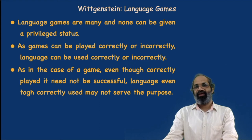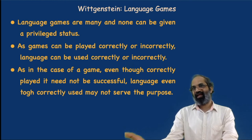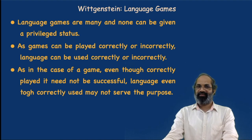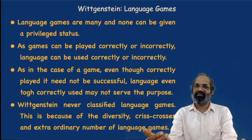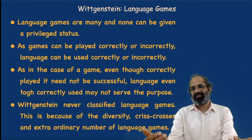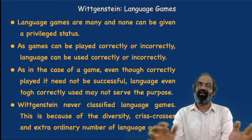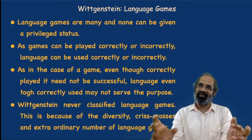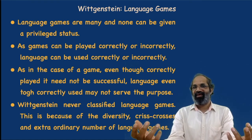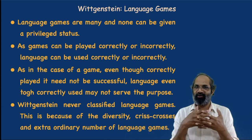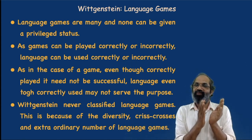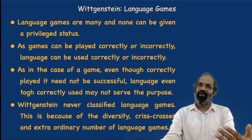Just as a game can be played correctly or incorrectly, language can be used correctly or incorrectly. And just as a correctly played game need not be successful, language even when correctly used may not always serve its communicative purpose. Communication does not always depend on the correct use of the language game — you may use it correctly and still have an error in communication. Because of the extraordinary diversity, criss-crossing, and large number of language games, Wittgenstein never attempted to classify them; you cannot put them into rigid boundaries.